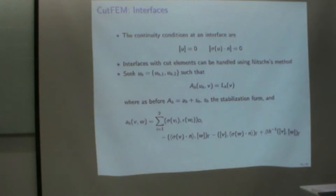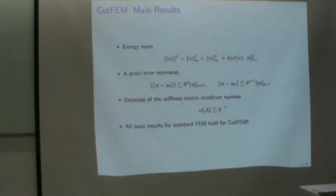So that's the basic setting. And then we can prove all the basic results here for a typical second order elliptic problems. So you would have optimal order a priori error estimates, and you would have a bound on the condition number as well. So basically you have all the results which you have for standard finite elements in this setting.